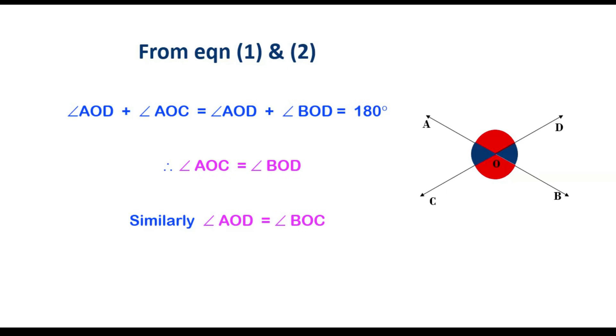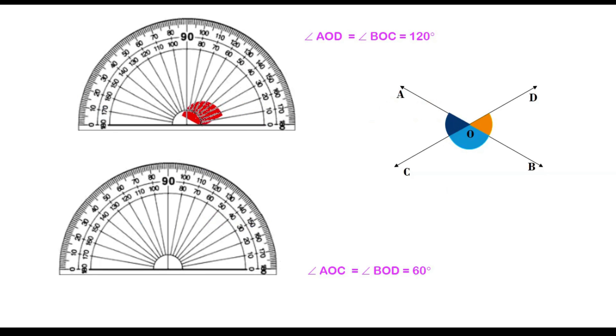According to axiom three, if equals are subtracted from equals, then the remainders are also equal. Here angle AOC equals angle BOD. Similarly, angle AOD equals angle BOC.